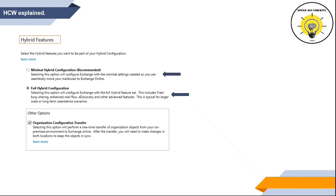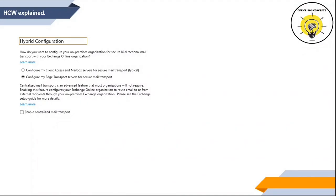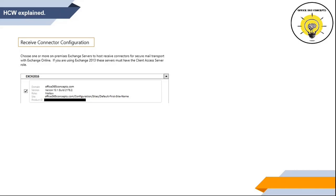For this demo, I have selected Full Hybrid Configuration. On the next screen, HCW will ask you how the connection between Exchange Online and on-premise Exchange should be established — whether to configure your mailbox server for mail transport, or if it should be handled by the edge transport server. On the next section, you can select if you want to enable centralized mail flow. On the next screen, you need to choose an on-premise Exchange server that will be responsible to receive emails sent from Office 365. This server should have an SMTP certificate on port 25, and port 25 should be open on your firewall.